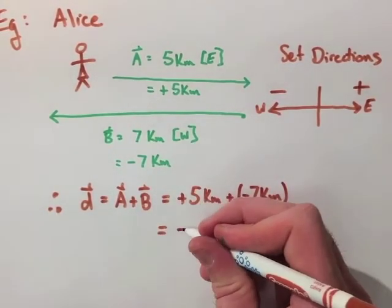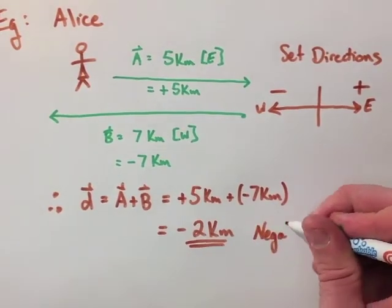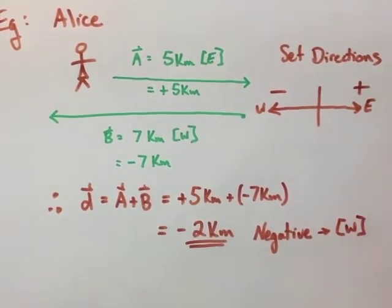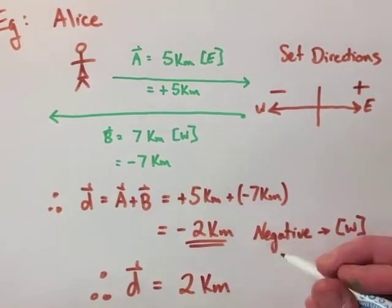When we add those together, we get negative 2. We find that negative is in the west direction, so we know that our final displacement is going to be 2 kilometers west.